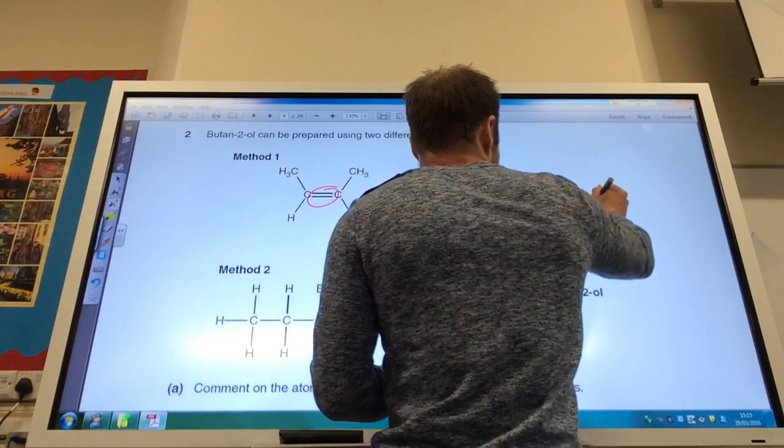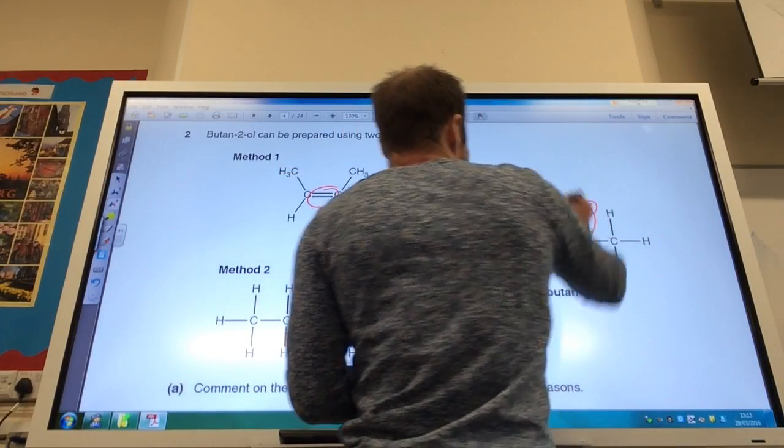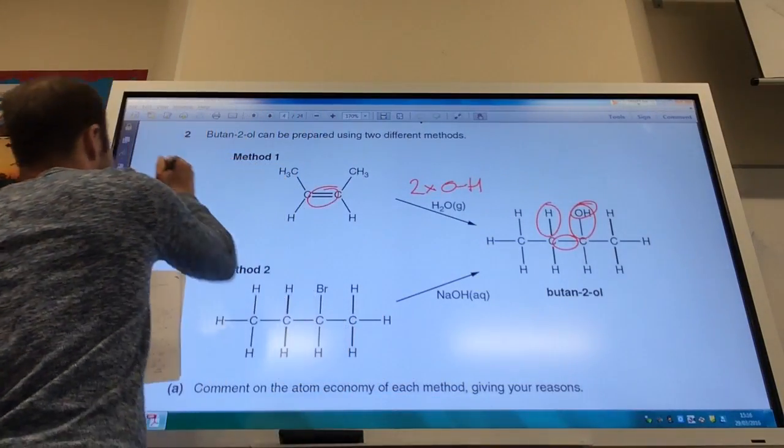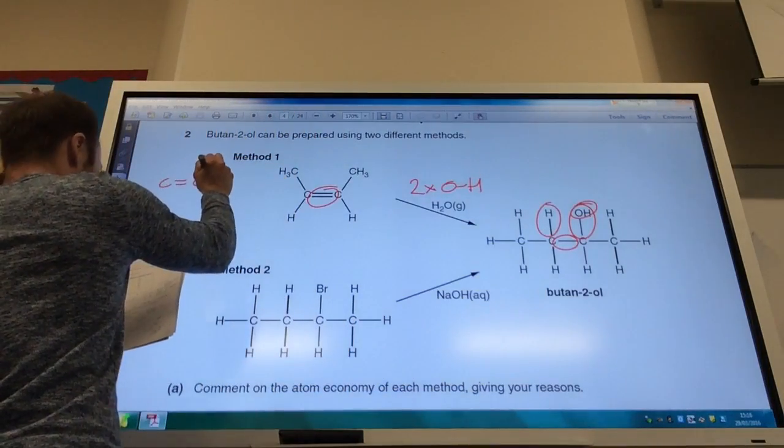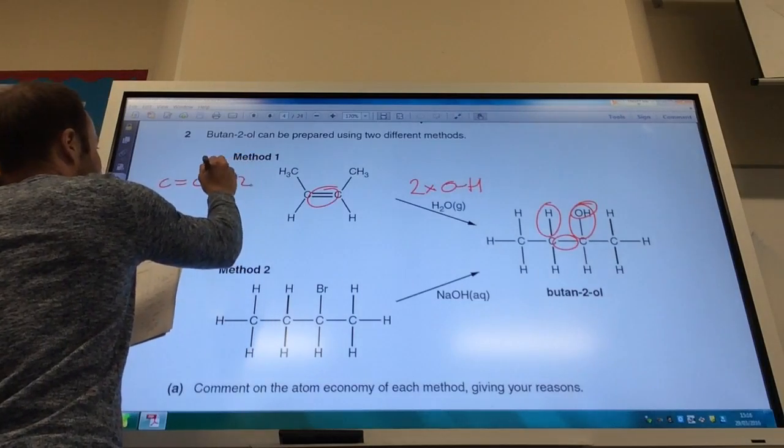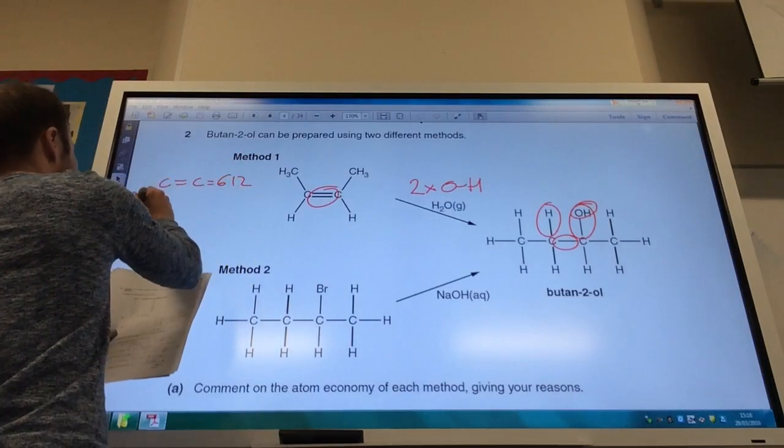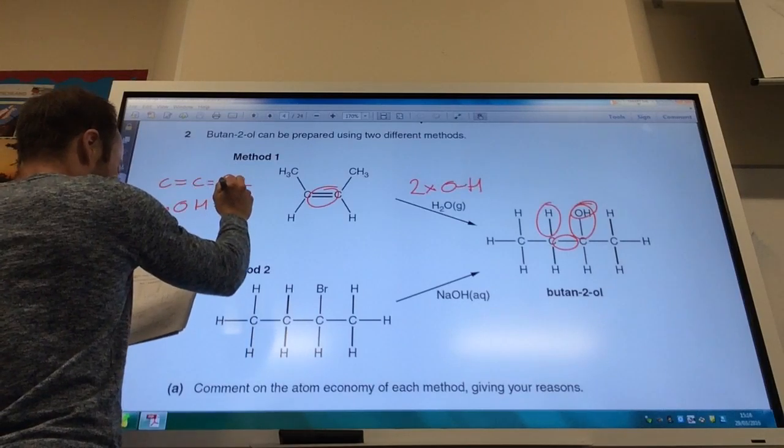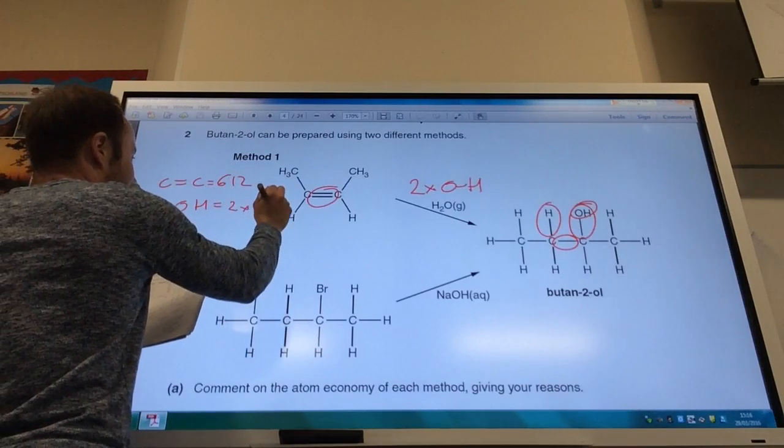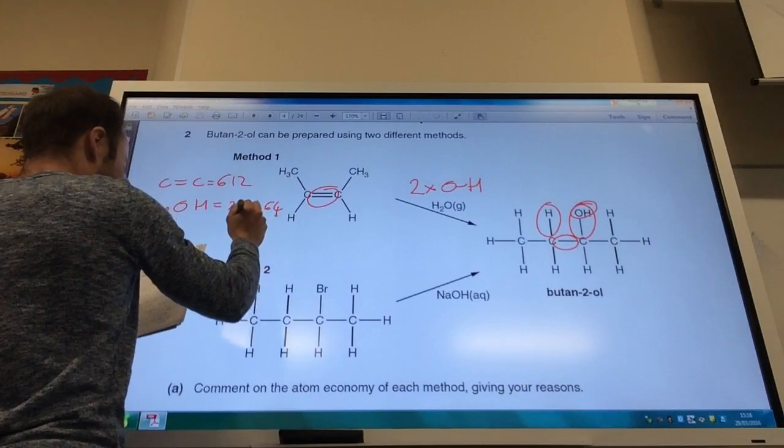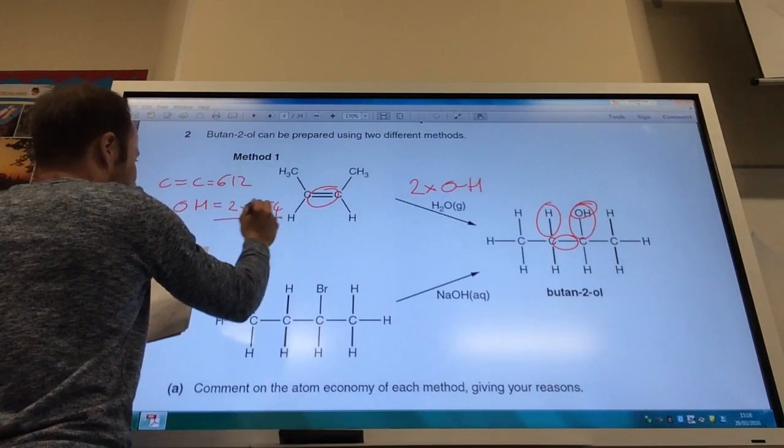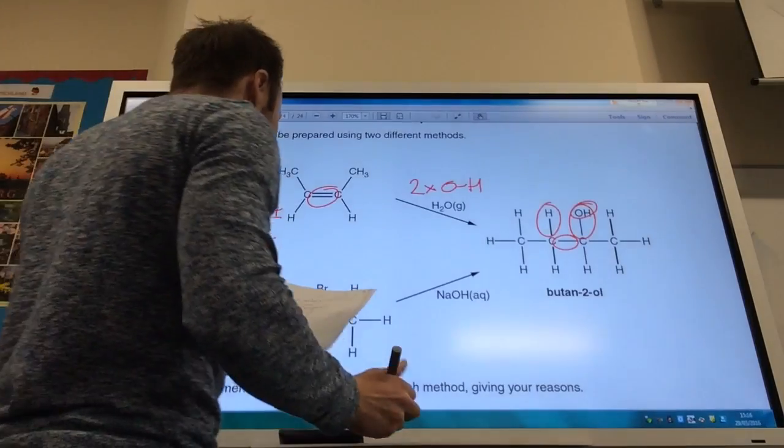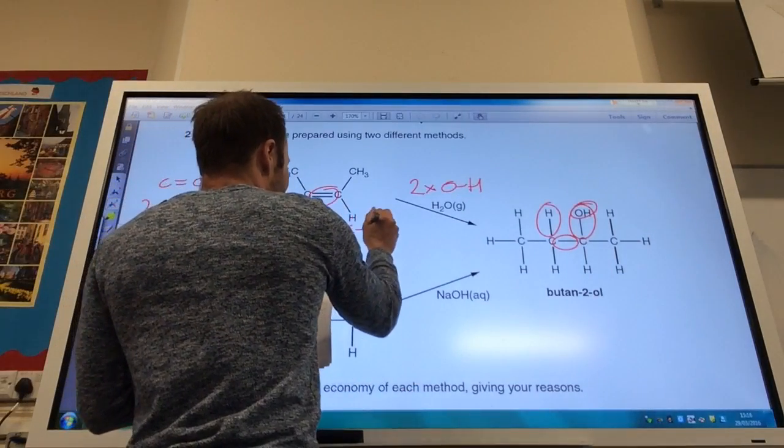So bonds broken, my carbon-carbon double bond is 612. You've got your 2 times OH bonds and that comes to 2 times 464. And if you add all of those up you get 1540.